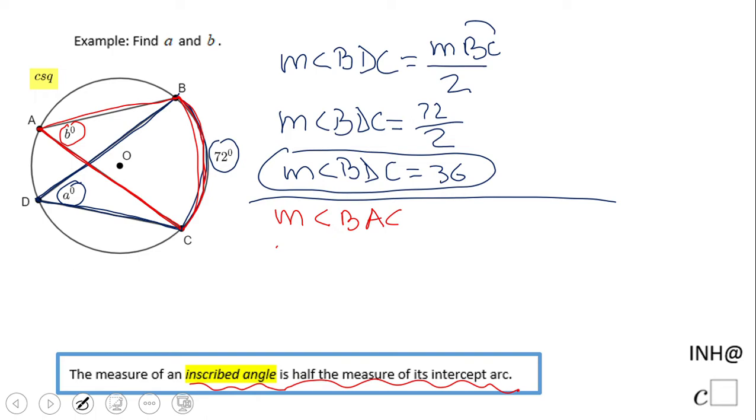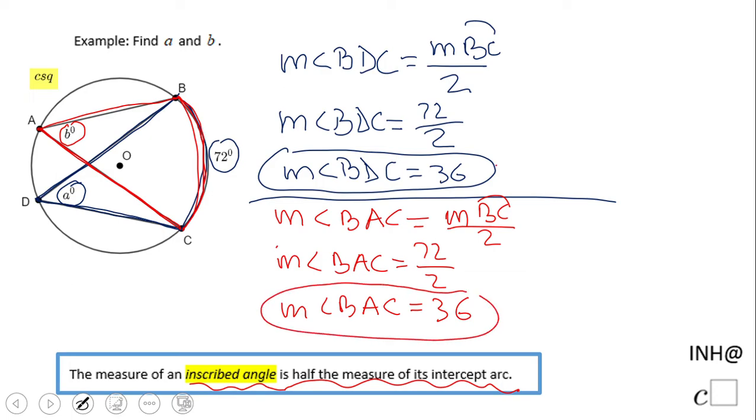Which means angle BAC is also 36. Looking at these two statements, you may say these angles are equal. Yes, they are equal: BDC equals BAC.